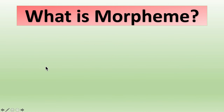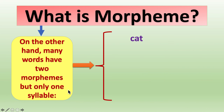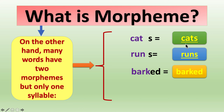On the other hand, many words have two morphemes but only one syllable. For example, 'cats' has two morphemes — 'cat' and 's' — but it is one syllable. Likewise, 'runs' has two morphemes but one syllable. 'Barked' has two morphemes but one syllable. 'Pens' has two morphemes — 'pen' and 's' — but one syllable.